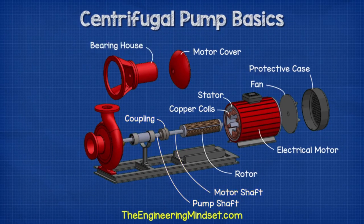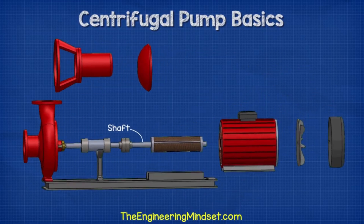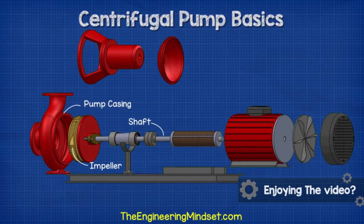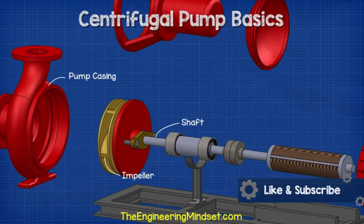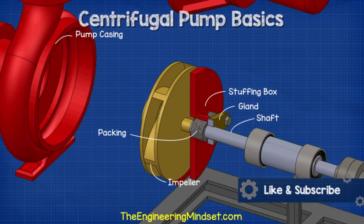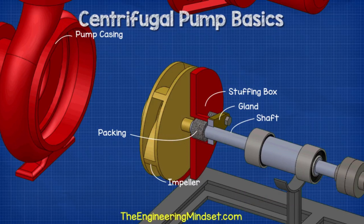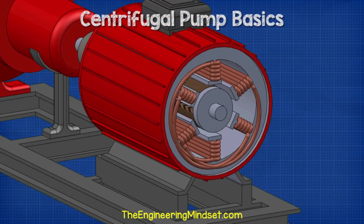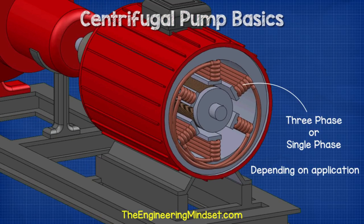Close-coupled pumps have a bearing housing which houses the bearings. The shaft continues into the pump casing, passing through a gland packing and stuffing box which together form a seal. The electrical motor comes in either three-phase or single-phase configuration depending on the application.